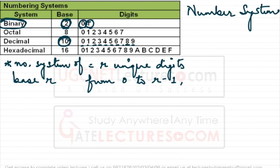In decimal we have base 10, so we have 10 unique symbols: 0, 1, 2, 3, 4, 5, 6, 7, 8, 9. And 9 is 10 minus 1 — confirming the pattern of 0 to R minus 1.